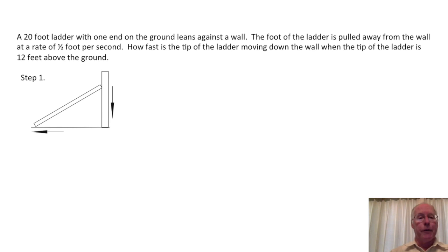Step one: draw a picture and give and define labels to important quantities, both variable and constant. Here's a possible picture. We can see the important elements of the problem here. We have the ground along which the ladder is pulled, the wall on which the ladder leans, and of course here is the ladder. The horizontal arrow indicates the foot of the ladder being pulled away. And in response, this arrow indicates the tip of the ladder moving down the wall. We need to work with variables too, so we'll need to assign names, that is letters, to important quantities.